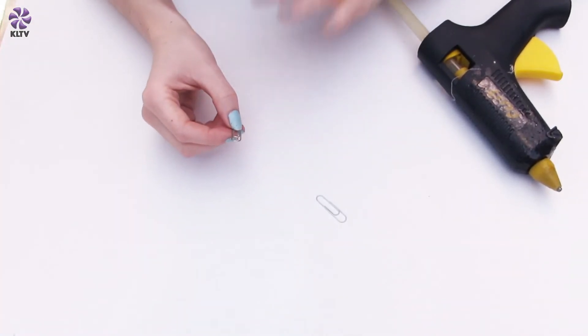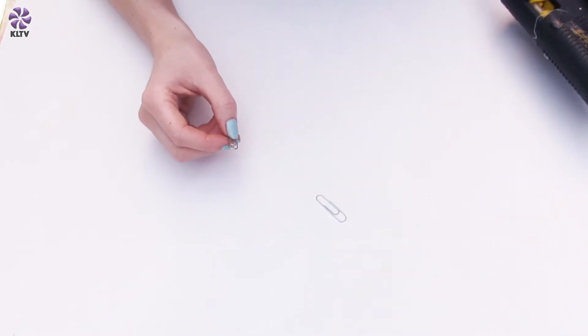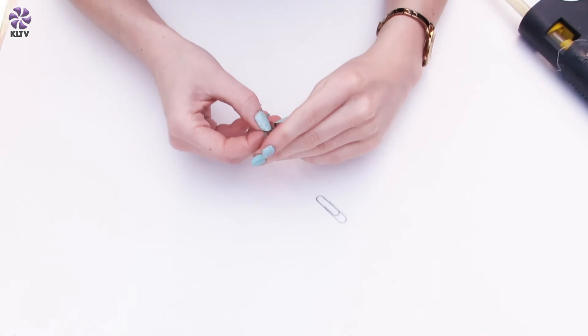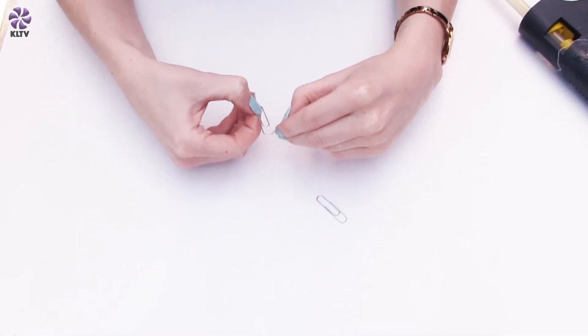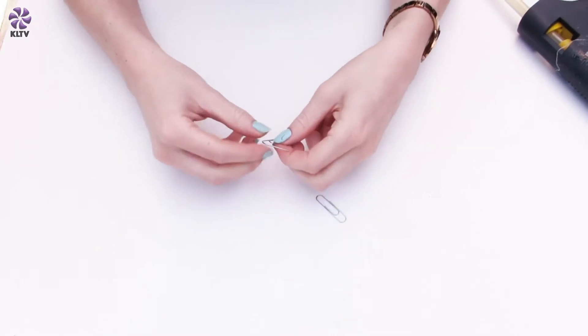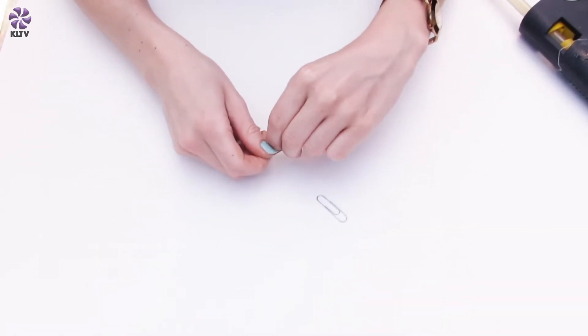So to start off with, we want to heat up our hot glue gun, make sure that it's nice and hot. And then we want to take our paper clip and we just want to start easing this paper clip apart and start to form a triangle shape with this paper clip.